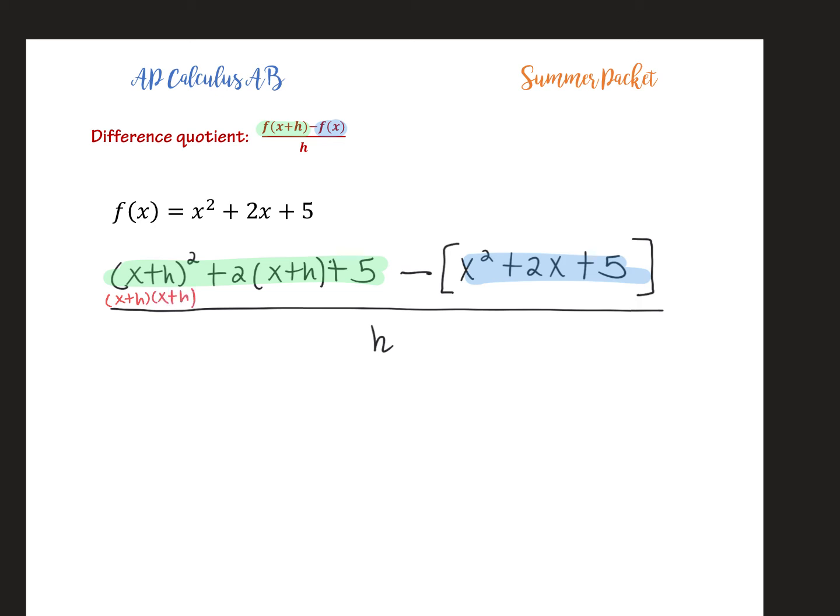So hopefully you're realizing, yeah, we need to FOIL this. So if I FOIL that, I get x² + 2xh + h². I'll distribute this 2 now, so 2x + 2h + 5. And then because I remembered to put those parentheses, I'm going to distribute this minus sign or the negative. And now it's all over h.